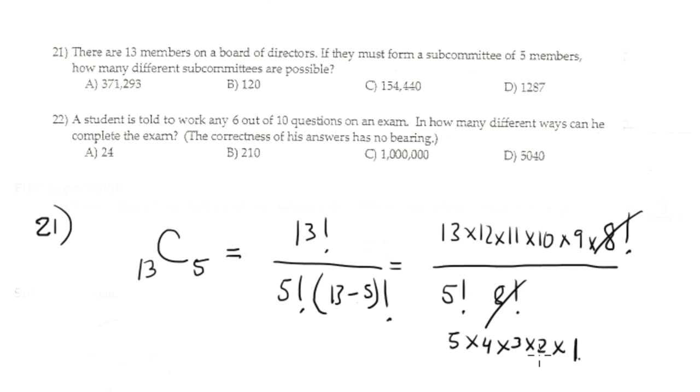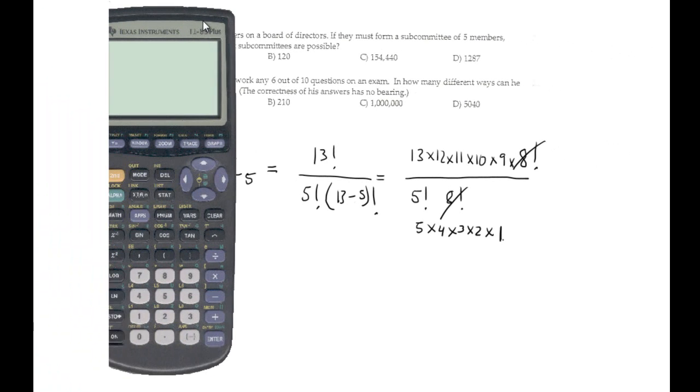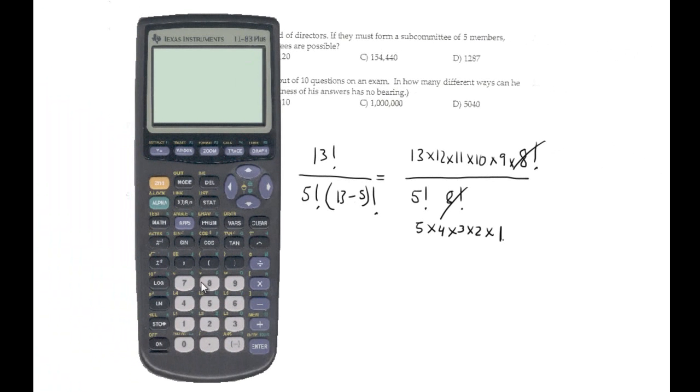And you expand this: 13 times 12 times 11 times 10 times 9 times 8 factorial, and you cancel 8 factorial. 5 factorial is 5 times 4 times 3 times 2 times 1. You put it directly in the calculator. It's parenthesis 13 times 12 times 11 times 10 times 9 divided by parenthesis 5 times 4 times 3 times 2 times 1, close the parenthesis.